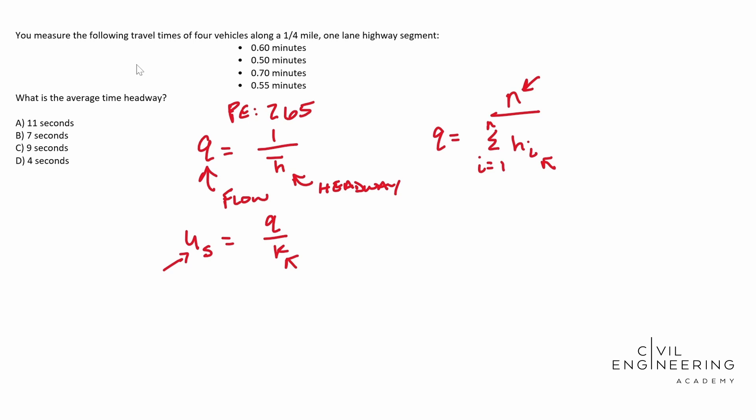So we have everything that we really need to know in a non-conventional way. So if we look for the space mean speed formula, U sub S, you're going to end up with N times L over sigma from I equals one to N of T sub I.